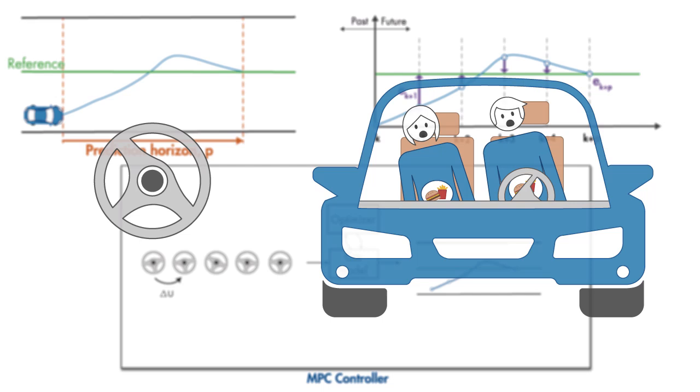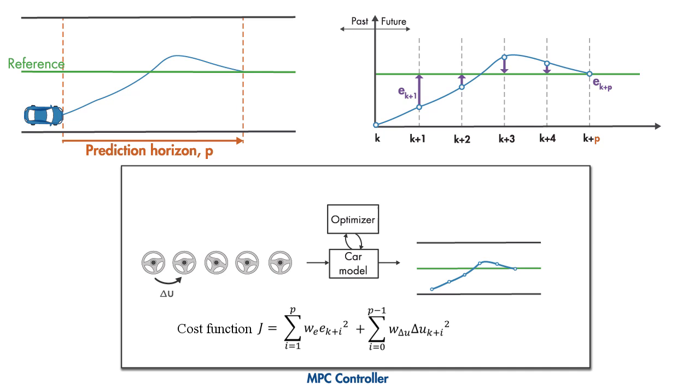The cost function J of this optimization problem includes both these terms and is represented as a weighted square sum of the predicted errors and steering wheel angle increments. While minimizing this cost function, MPC also makes sure that the steering wheel angle and car's position stay within prescribed limits. These are referred to as constraints.